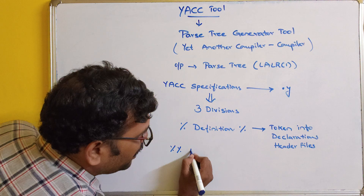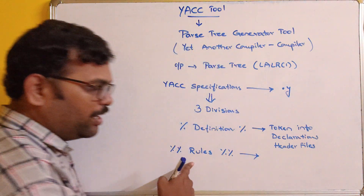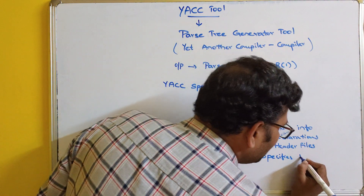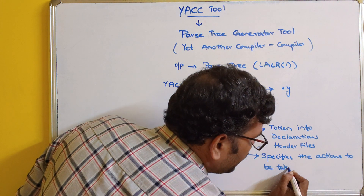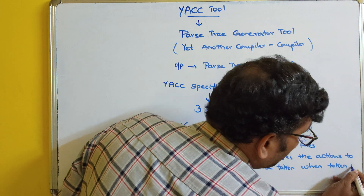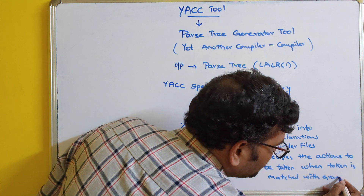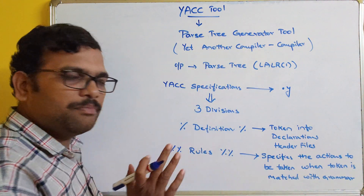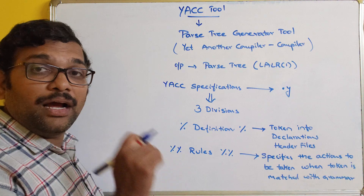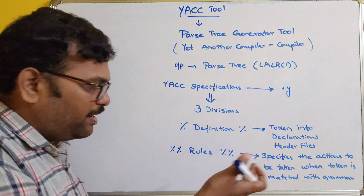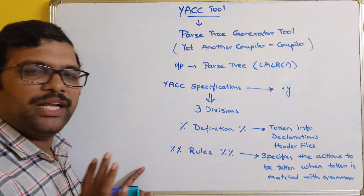The second section is the Rules section, also enclosed between two percentage symbols. This is the most important section. It specifies the actions to be taken when a token is matched with the grammar. The YACC specifications contain some grammar, and after processing it we get a parsed string, taking tokens as input.